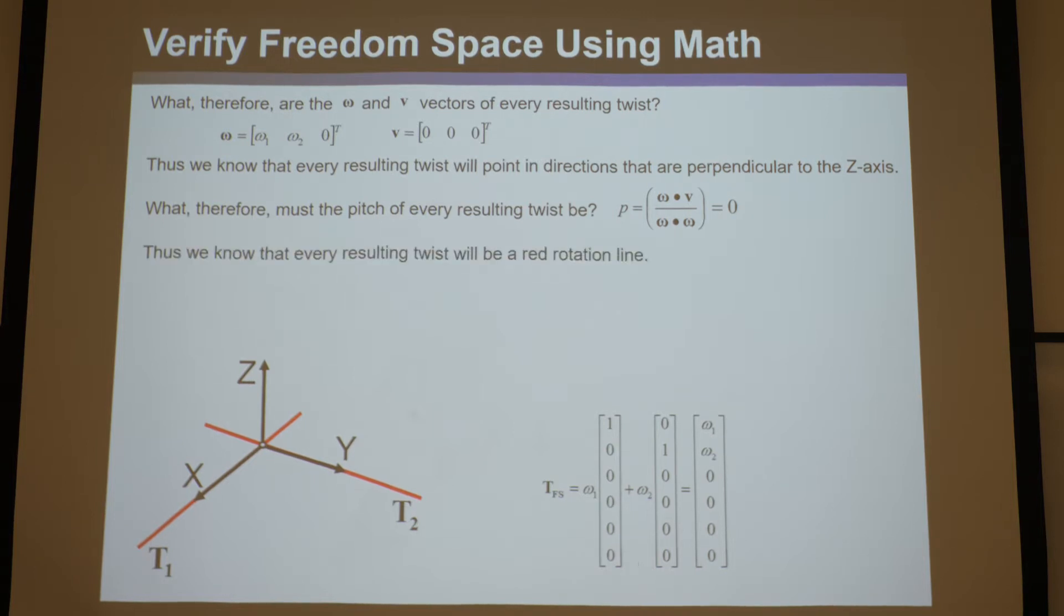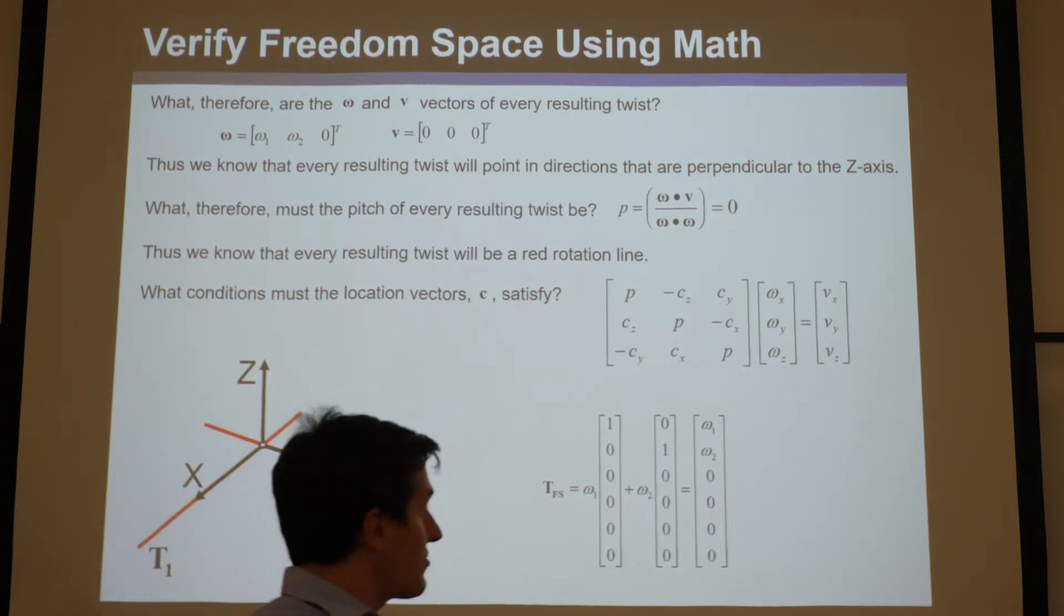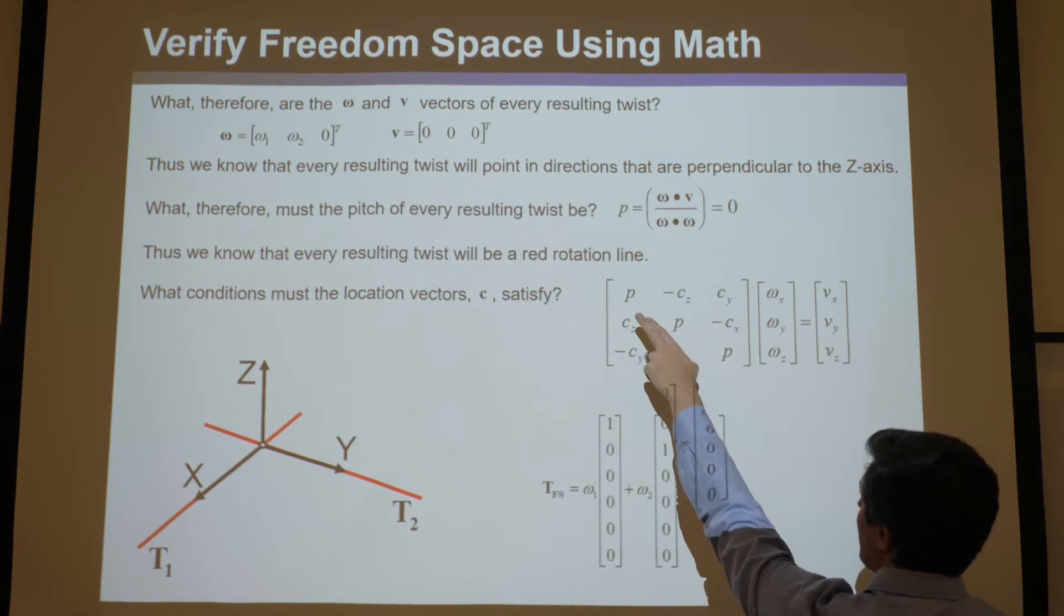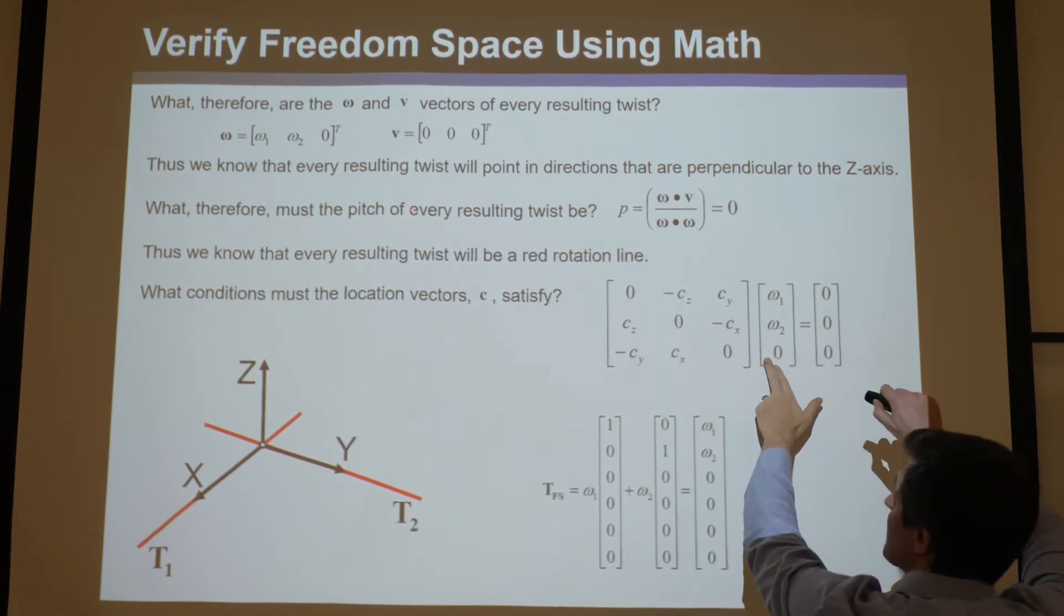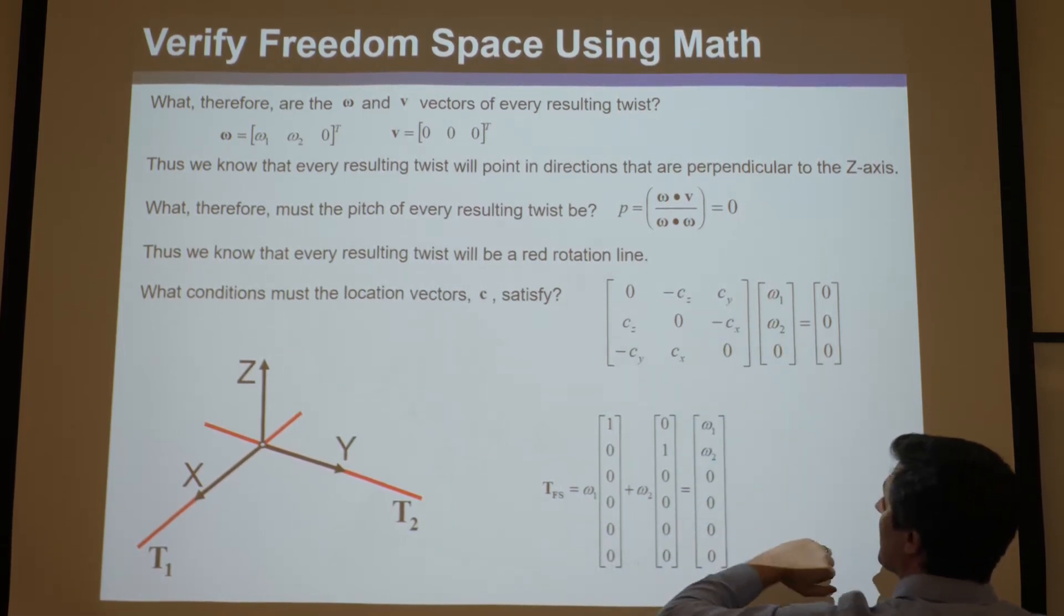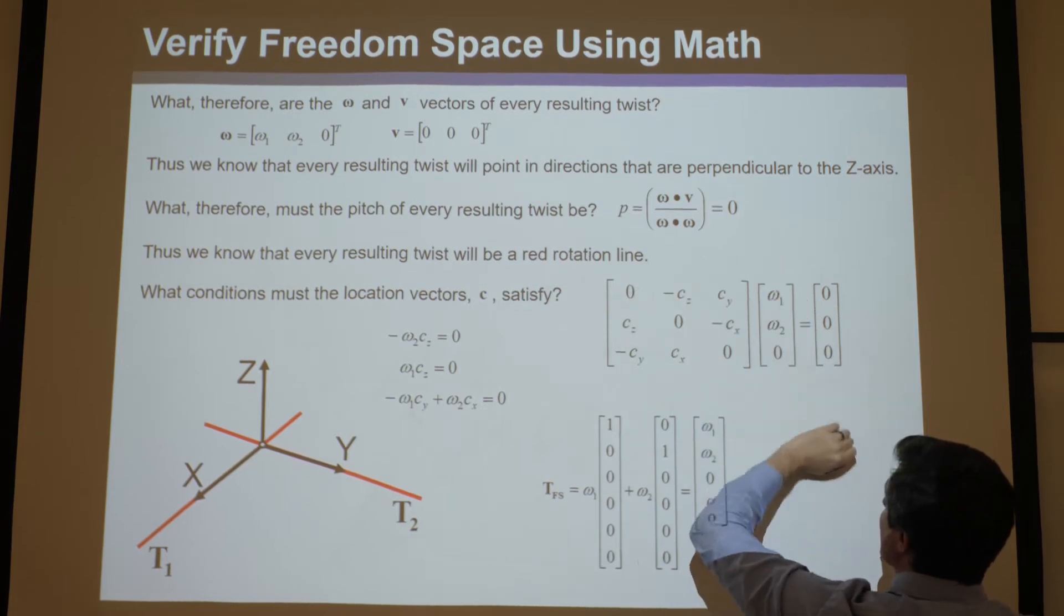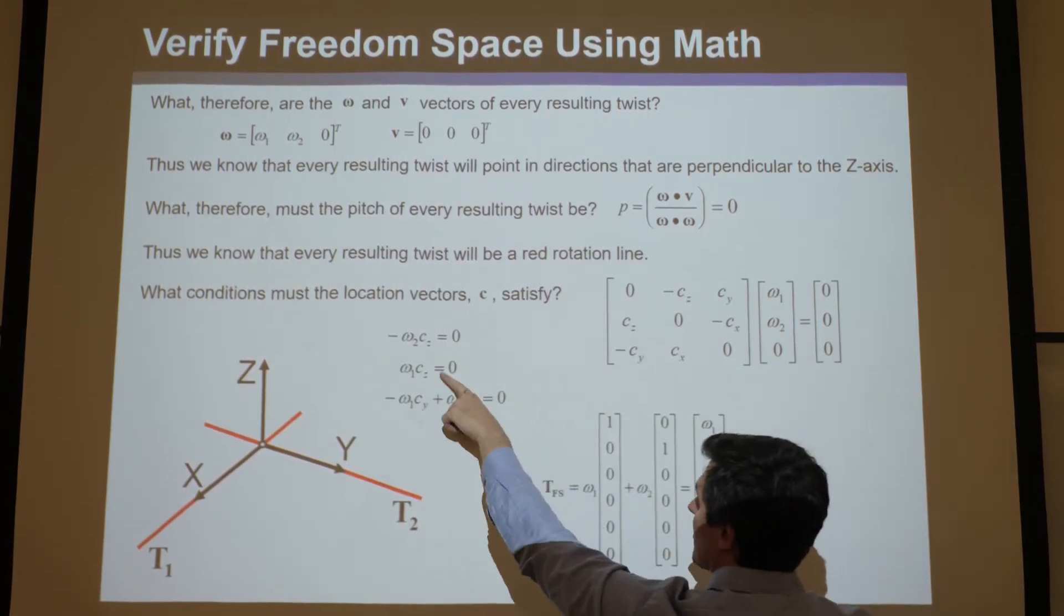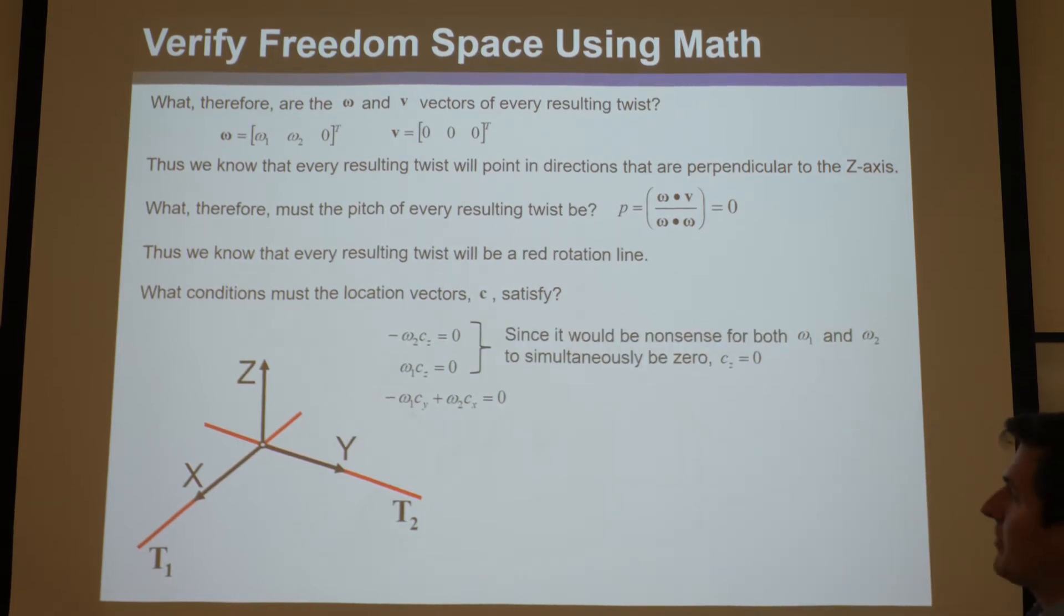Now let's do the location vector. You can find what conditions must the location vector C satisfy. If you do our vector here from lecture 2, or our matrix, this is how you find the C vector. You know the pitches are all 0. You know the omega is this one, and you know the v vector is this one. Then you times this in and write your three equations. If you times this by this, set it equal to 0, times this by this, set it equal to 0, times this by this, set it equal to 0. You get these equations, which now we can interpret.